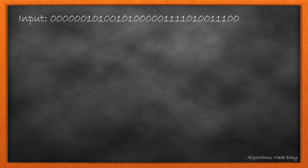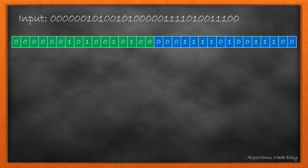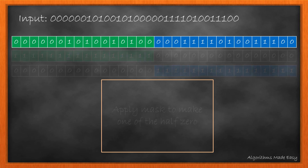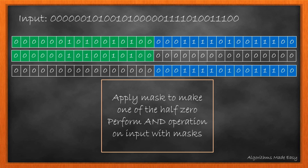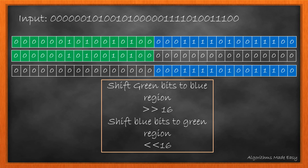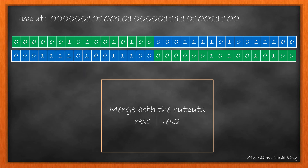Taking the same input, we will first divide it into two parts and then reverse the bits in the green and blue regions. To do this, we will need two masks, with ones in the position of bits we want to keep and zeros in the position of bits we want to discard. The AND operation of the mask with the input will preserve half of the bits as we can see on screen. To reverse these bits, we shift the green bits to the blue region and the blue bits to the green region. We achieve it by shifting the bits right and left 16 bits respectively. After doing so, this becomes our output, and we then merge both of them by performing an OR operation.